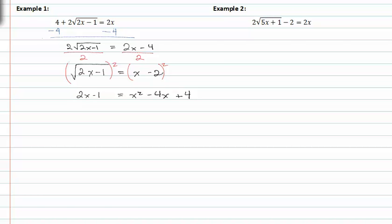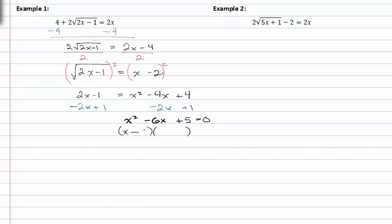Moving on, we need to isolate or set the equation equal to zero. So I'm going to subtract 2x from both sides and add one to both sides. This gives me x squared minus six x plus five equals zero, and now I can factor that. This factors to x minus one, x minus five.